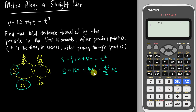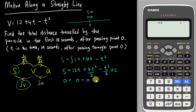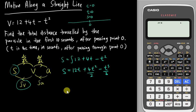In order to find the constant c, pay attention to the sentence: t is the time in seconds after passing through point O. This means the displacement at point O is zero, and the time starts counting only after passing O, so at O itself time equals zero. Substituting s equals zero when t equals zero gives zero plus zero minus zero plus c, so c equals zero. Therefore the displacement equation is s equals 12t plus 2t squared minus t cubed over 3.